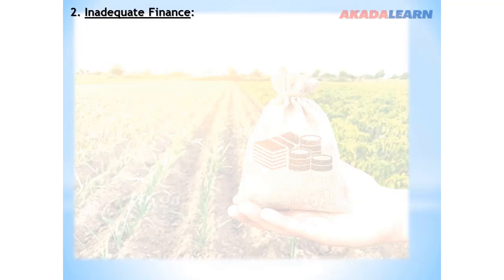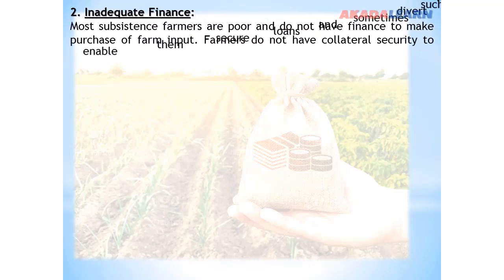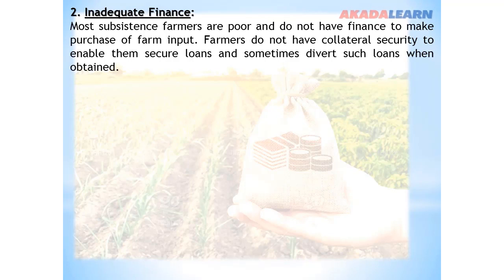Problem number two: Inadequate Finance. Most subsistence farmers are poor and do not have finance to purchase farm inputs. Farmers do not have collateral security to enable them to secure loans, and sometimes divert funds when loans are obtained.